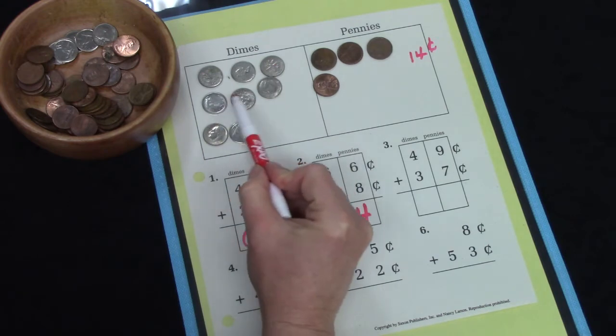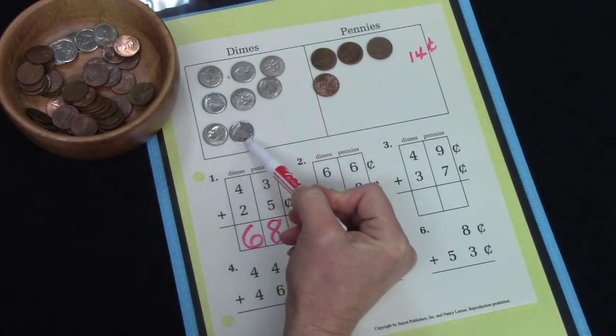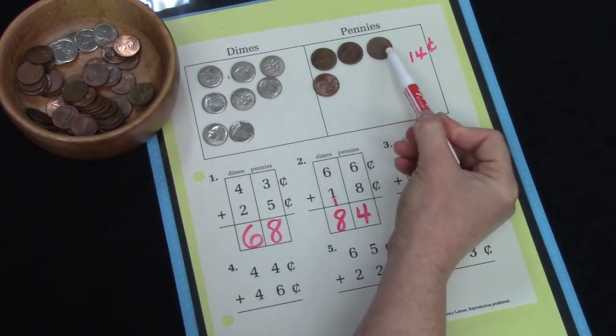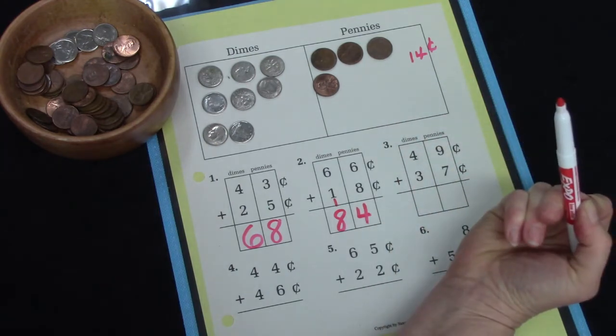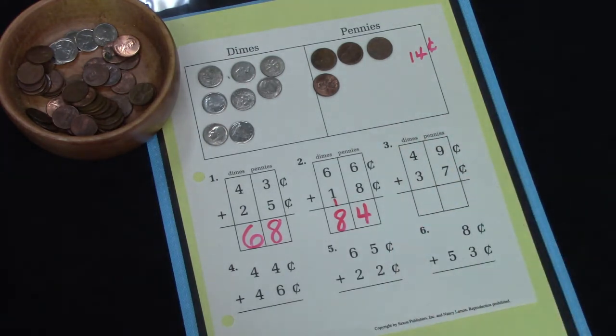Let's count our money and see if we have 84 cents. 10, 20, 30, 40, 50, 60, 70, 80, 81, 82, 83, 84. Well done! Let's try another question.